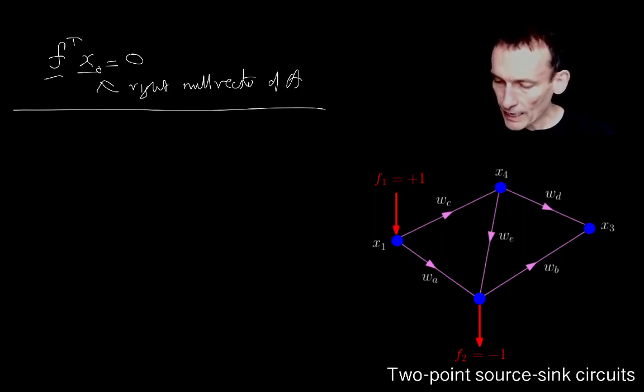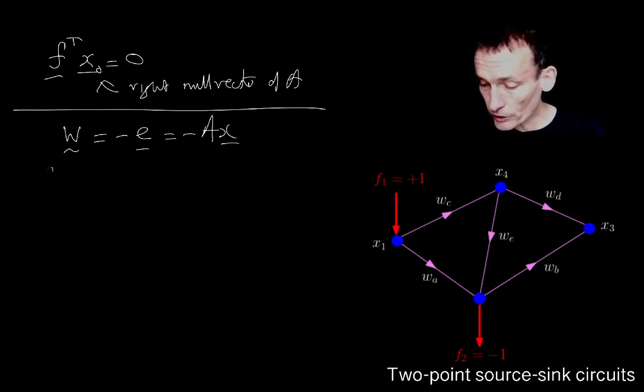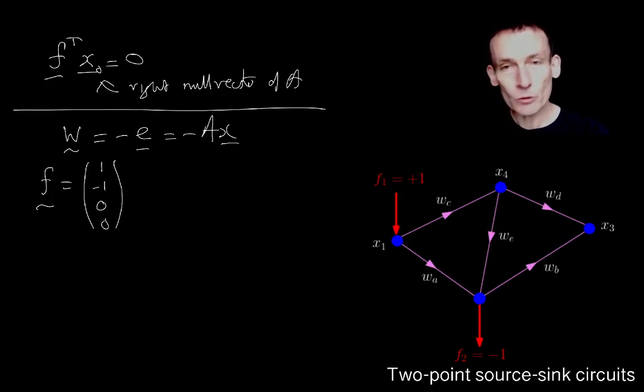Now, remember what we have. We're assuming, by the way, again, unit conductance of all the conductors, all the edges. So we've got that the vector of currents is minus E, which is minus AX. That's Ohm's law. Then we've got that F, which now, by the way, is equal to one minus one, zero, zero.